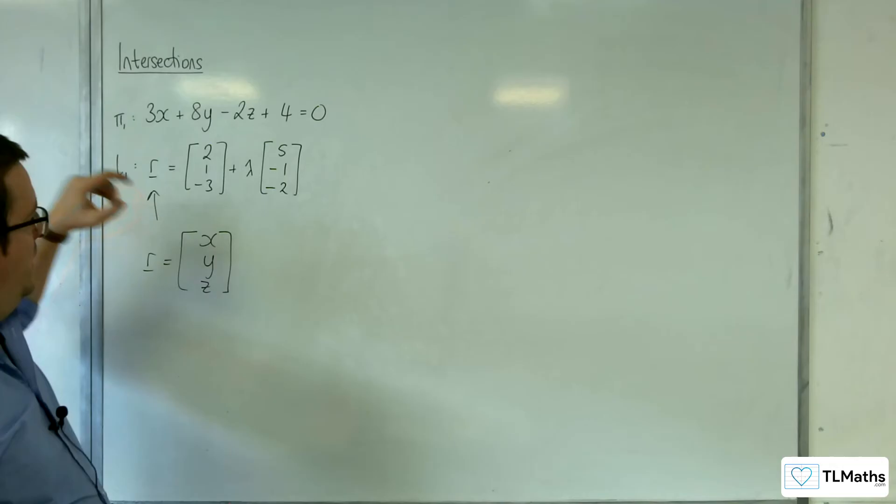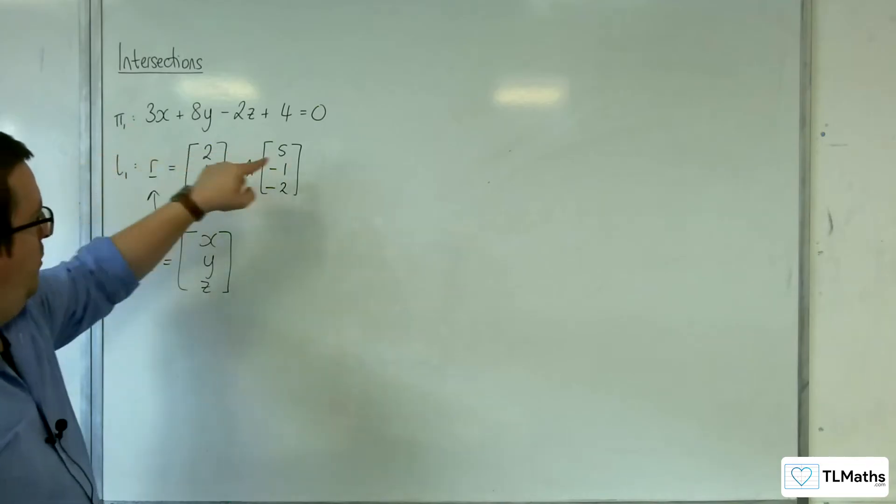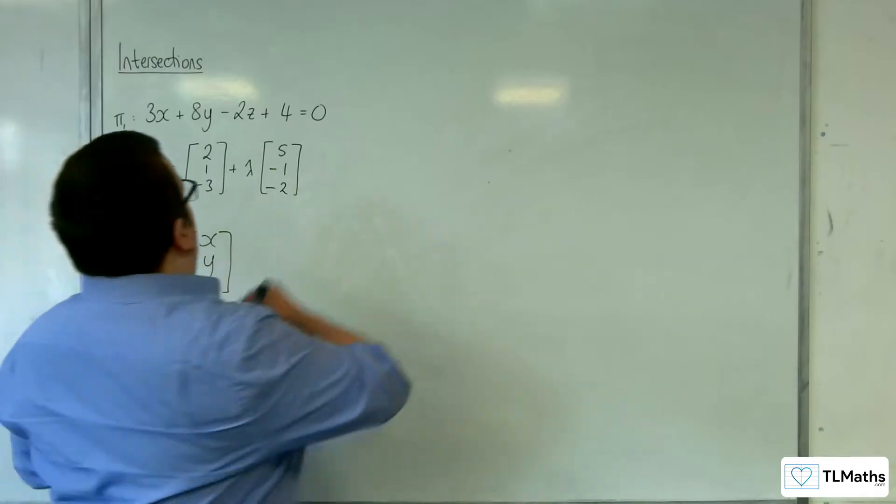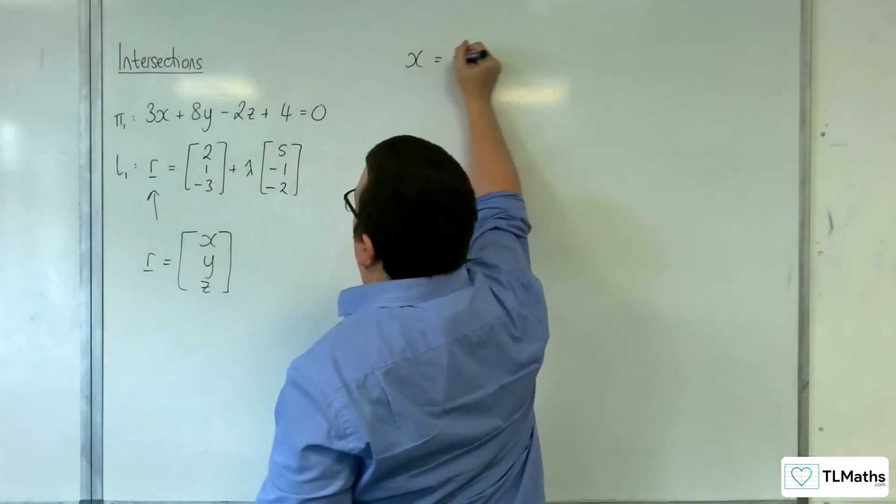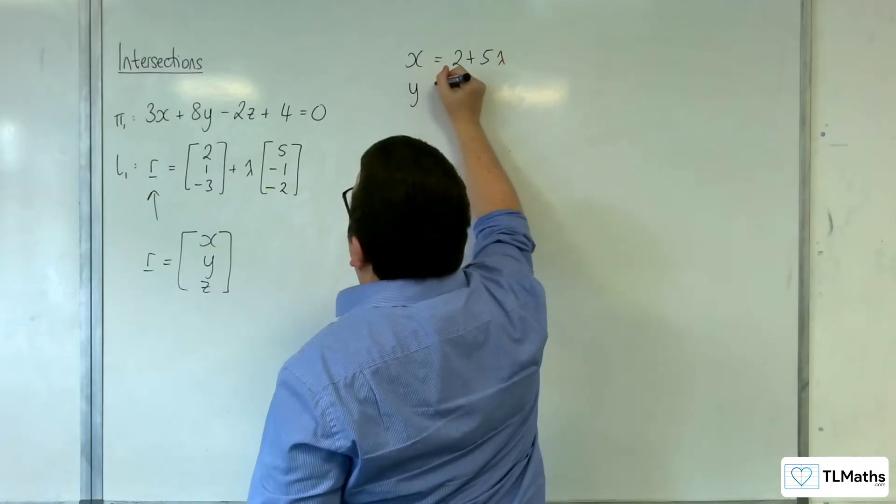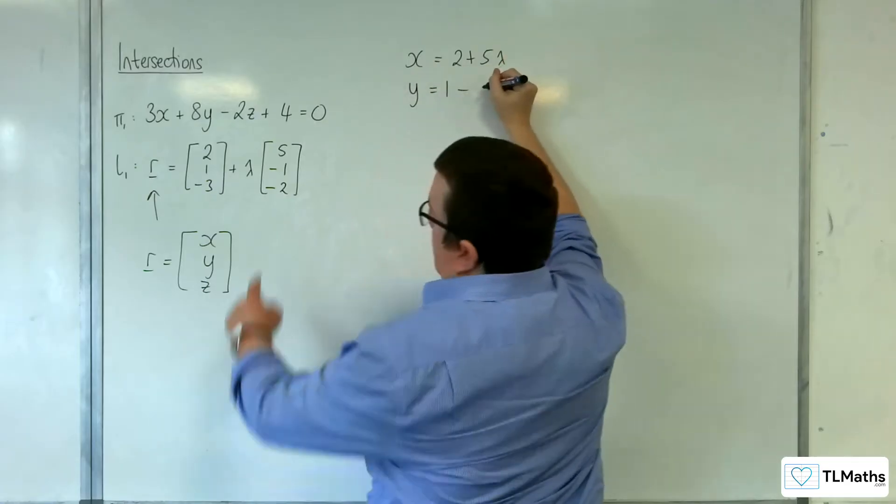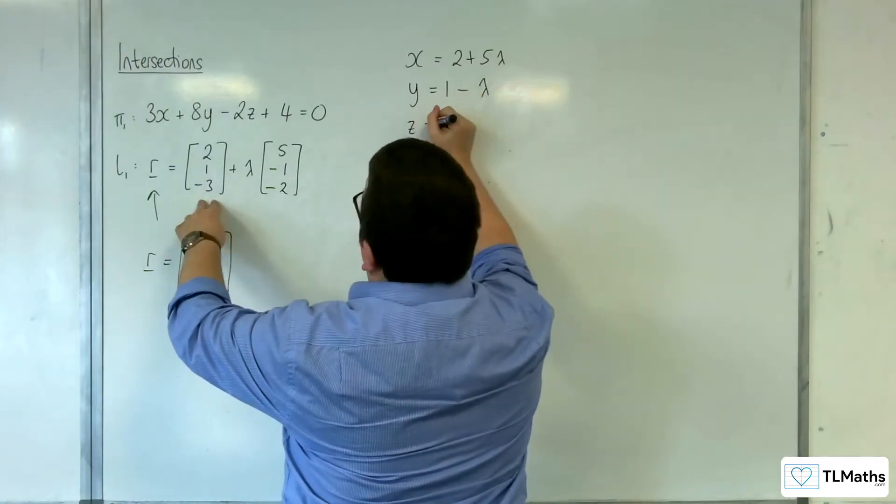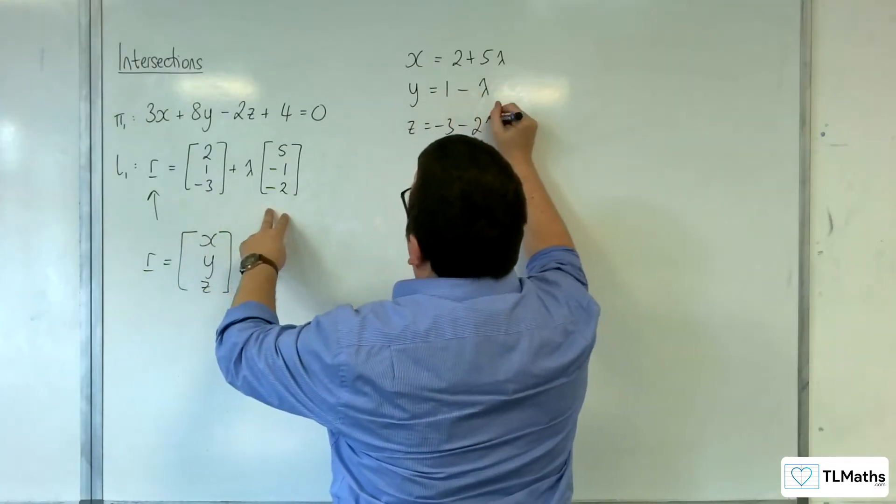But each of these can be written as the top, middle and bottom row of the line. So X is equal to 2 plus 5 lambda. Y is equal to 1 take away 1 lambda. And minus 3, so Z is equal to minus 3 take away 2 lambda.